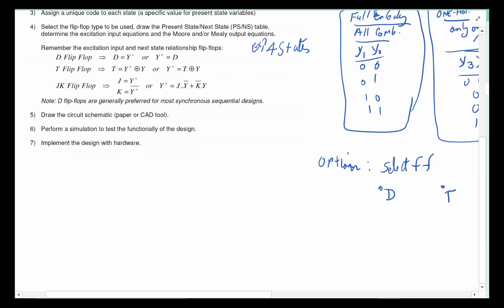Once you've done that, you do the present state, next state. Once you've done the present state, next state, you use each one of the columns to figure out what these are supposed to be, what T is supposed to be, or if you have a D flip-flop, what all the D's are, which are called excitation inputs.